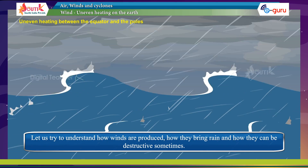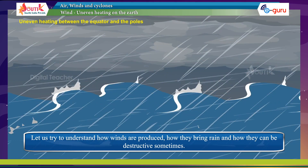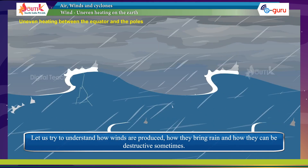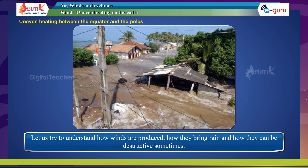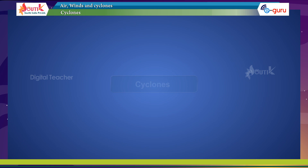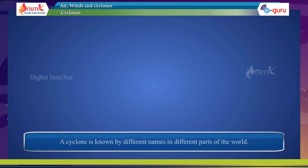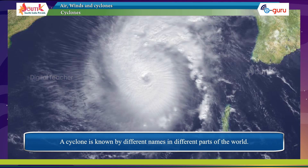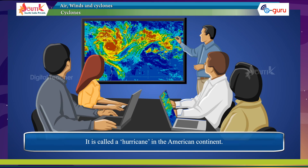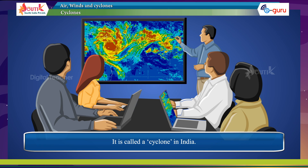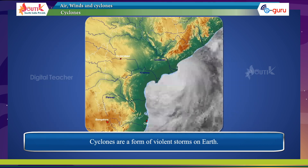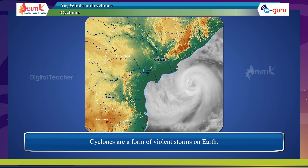Let us try to understand how winds are produced, how they bring rain, and how they can be destructive sometimes. A cyclone is known by different names in different parts of the world. It is called a hurricane in the American continent. In the Philippines and Japan, it is called a typhoon. It is called a cyclone in India. Cyclones are a form of violent storms on earth.